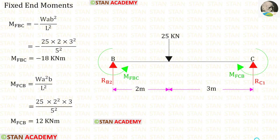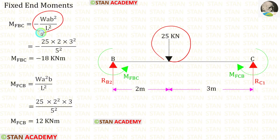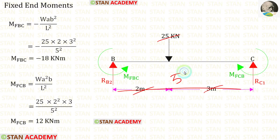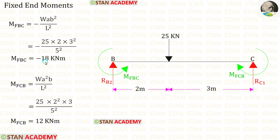Now let us find the fixed end moments in span BC. In span BC, we have an eccentric point load. The formulas to find the fixed end moments are minus WAB² upon L² and positive WA²B upon L². Here W is 25, A is 2, B is 3, and the total length is 5. After applying all values in the formulas, we get M of BC and M of CB.